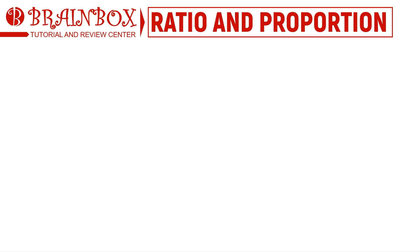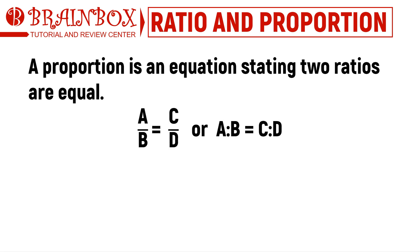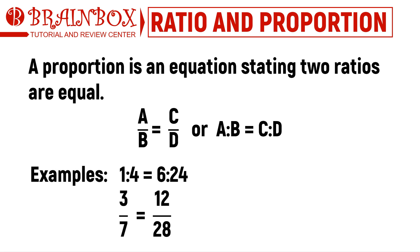Now let's move on to the concept of proportion. A proportion is an equation which shows that two ratios are equal. In symbols, we can write it as a/b = c/d, or a to b equals c to d. Examples of proportion include: 1 is to 4 as 6 is to 24, and 3/7 equals 12/28. We can also write proportions in fraction or colon notation.